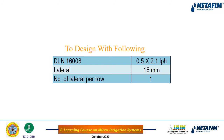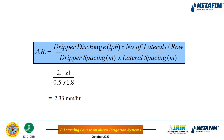The design uses Netafim drip line 16008 with 0.5 m dripper spacing, 2.1 lph dripper discharge, 16 mm lateral, 1.8 m row spacing (lateral spacing), and one lateral per row. The application rate is calculated as: (2.1 lph × 1) ÷ (0.5 m × 1.8 m) = 2.33 mm/hr.